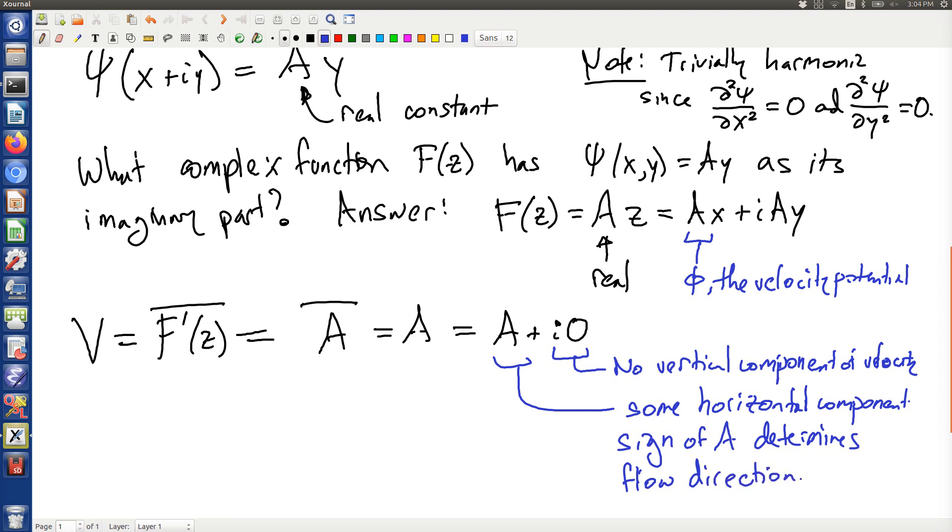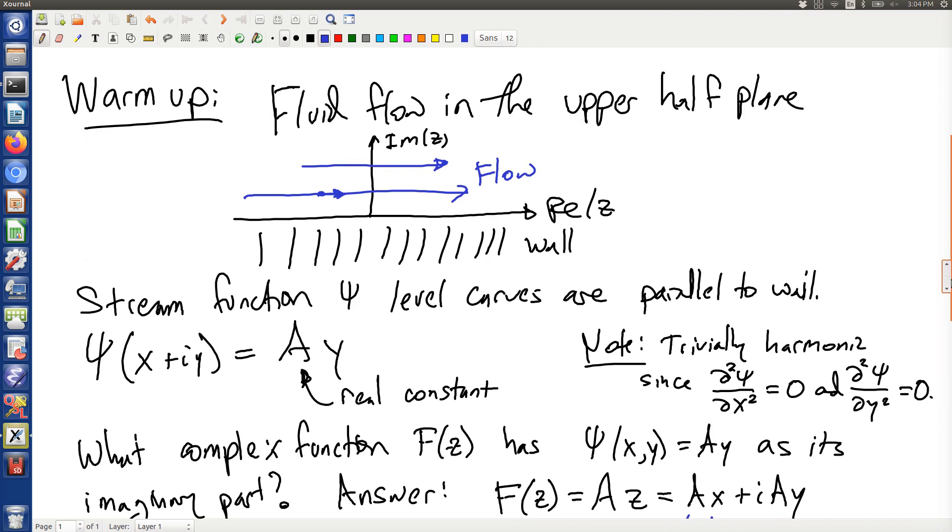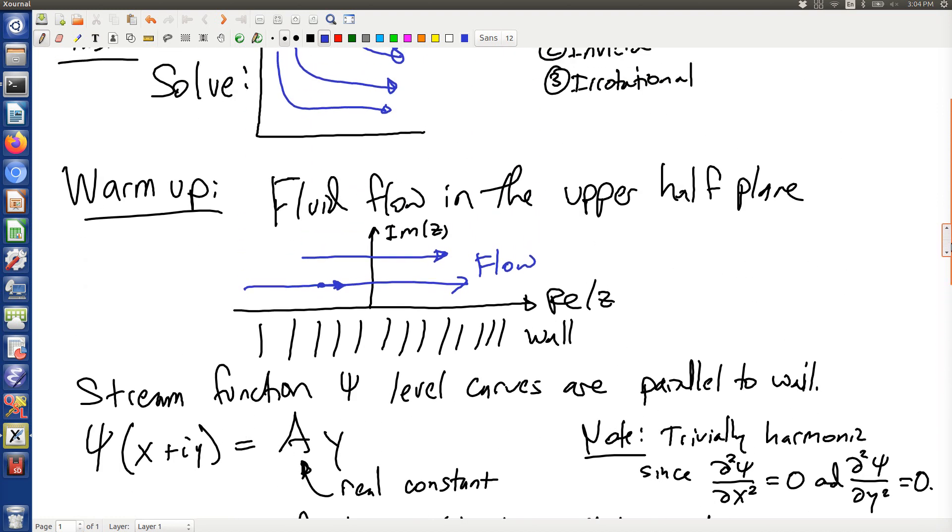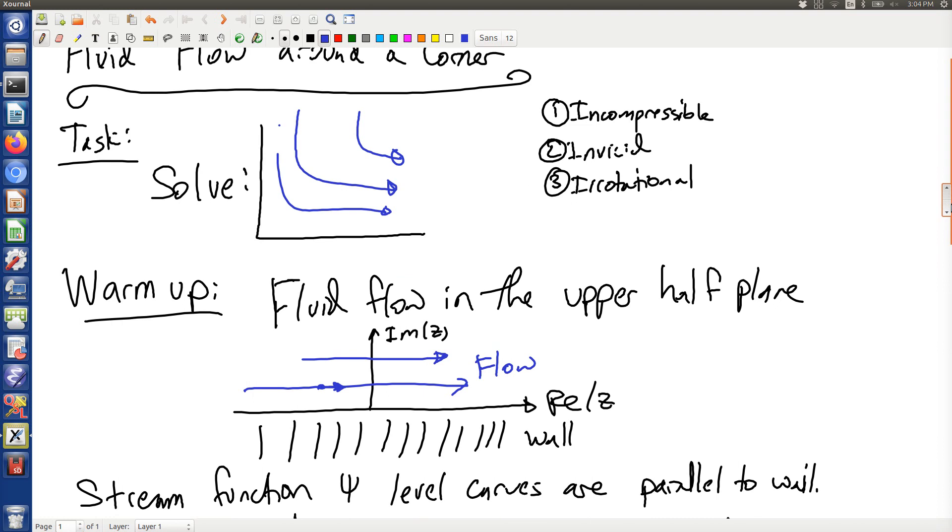Okay. So the sign of a determines flow direction. Cool. So I have this analytic function f that describes how everything is working in terms of the fluid flow. Great. But that was just the warm up. I'm really interested in this corner. What do I get from the corner to the straight line?